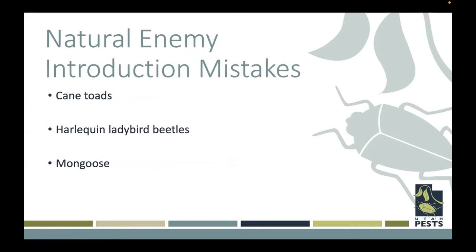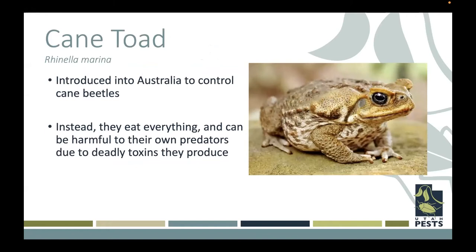There could be some problems with going over to a foreign country and bringing over a natural enemy to control another insect, and there've been many mistakes. The cane toad was introduced into Australia to control the cane beetle. The problem with toads is that they're generalist predators — they eat everything, not just cane beetles, and can produce deadly toxins that can harm or kill predatory birds that eat them. This was not a successful story and really was a bad idea.